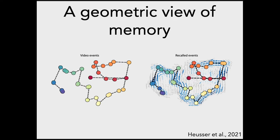The color represents time — red means early, blue means late. Events nearby in space are about similar content. There's no clustering specifically applied; we're just projecting the high-dimensional text embedding space down to two dimensions. Points that are nearby in text embedding space get mapped onto similar locations in the 2D projection.